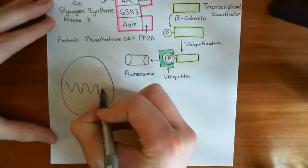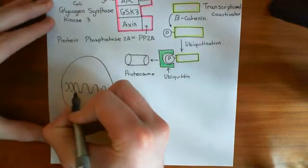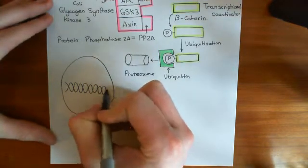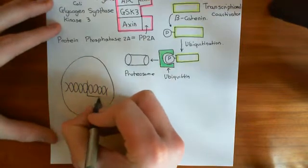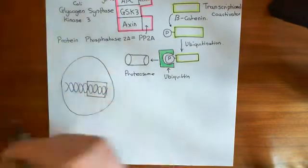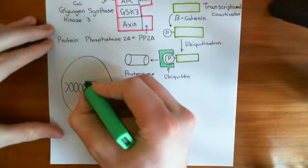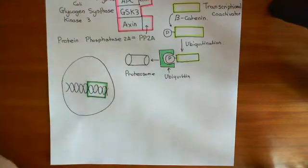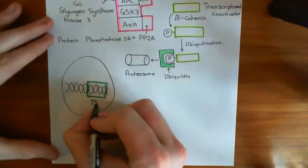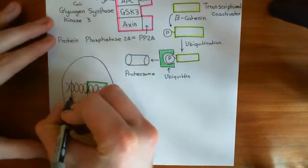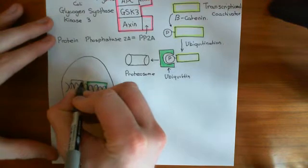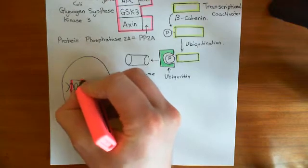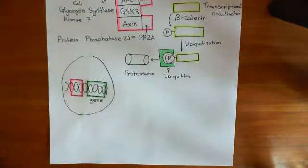In eukaryotic cells, upstream of all genes, you have what is known as a promoter region. This isn't the case in prokaryotes, but in eukaryotes it is. In front of all genes — upstream is the technical term — there is a promoter region. The promoter region does not actually code for protein; the sequence of bases in this region is not used to make protein.